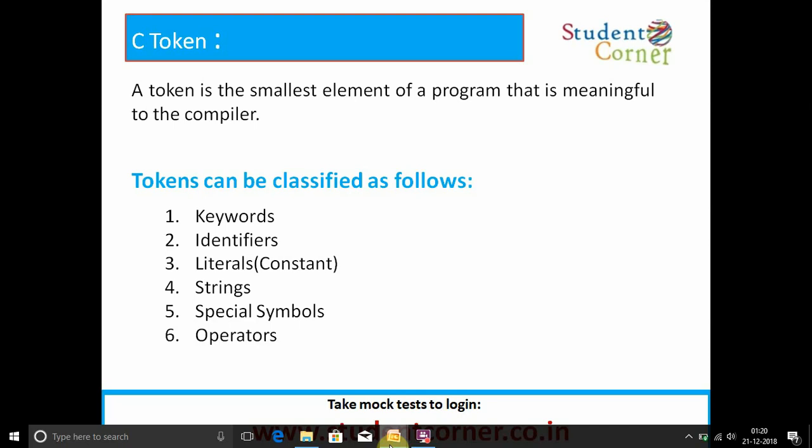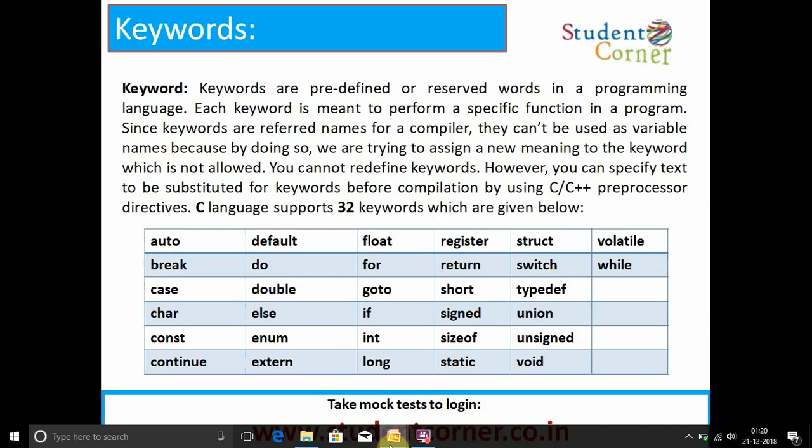Keywords are predefined or reserved words in a programming language. Each keyword is meant to perform a specific function in a program. Since keywords are reserved names for the compiler, they cannot be used as variable names, because by doing so we are trying to assign a new meaning to the keyword, which is not allowed. You cannot redefine keywords.